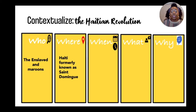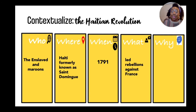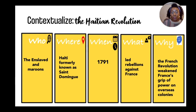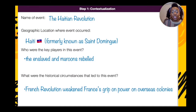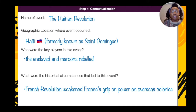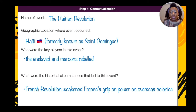Let's look at another example. Where: Haiti, formerly known as Saint-Domingue. When: 1791. What: led rebellions against France. Why: because the French Revolution weakened France's grip on power over overseas colonies. Now we're going to add this to our scale tool. Same for the name and geographic location. Who were the key players? The enslaved and maroons rebelled. What were the historical circumstances? The French Revolution weakened France's grip on power over overseas colonies.